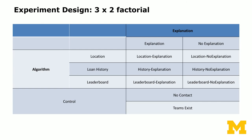The experiment design is a three-by-two factorial design. On one dimension, one factor varies the algorithm — how we recommend teams: by location similarity, loan history similarity, or leaderboard position. The other dimension is whether we actually explain how we came up with the recommendations — one condition with explanation, and one without explanation — while controlling for the recommendation algorithm.